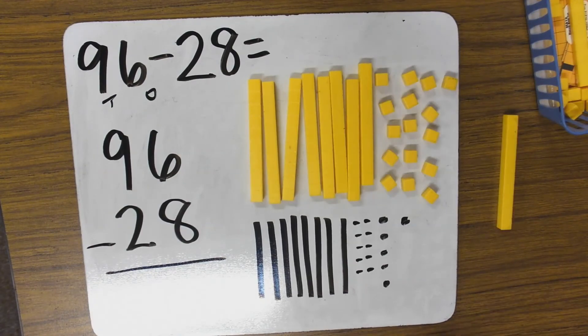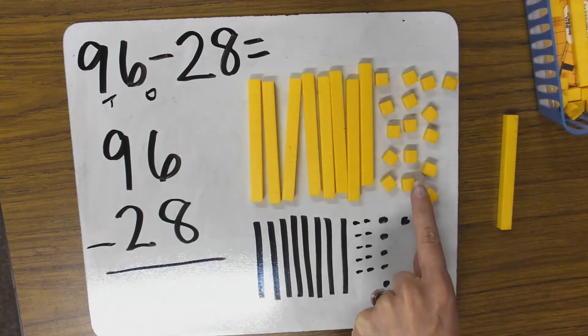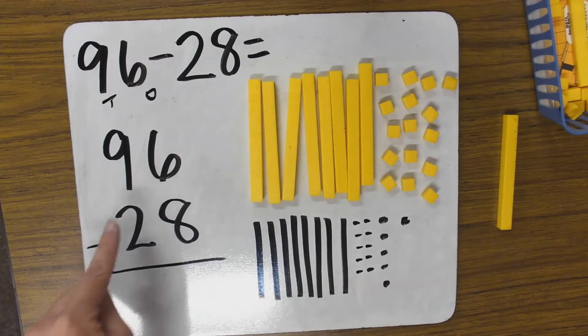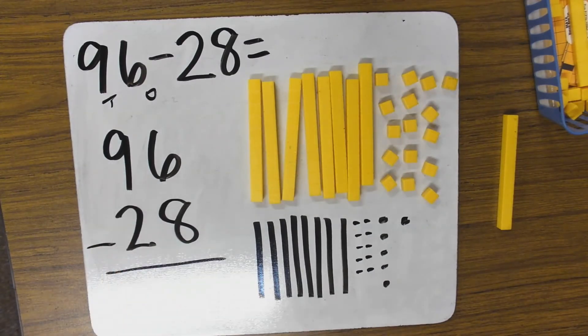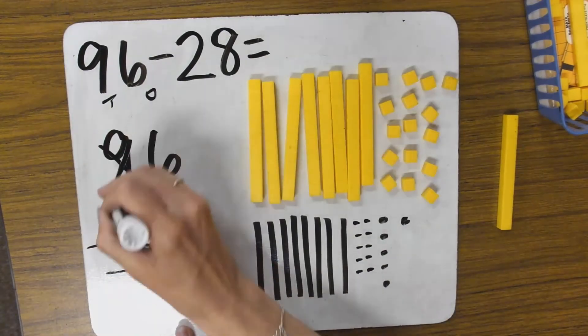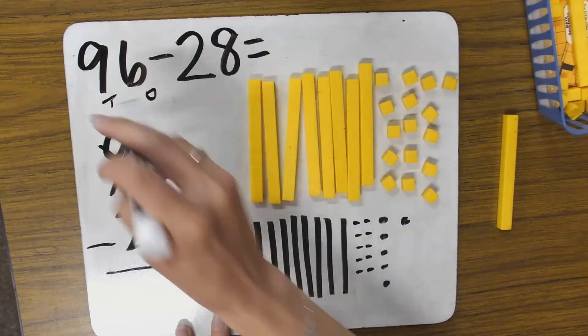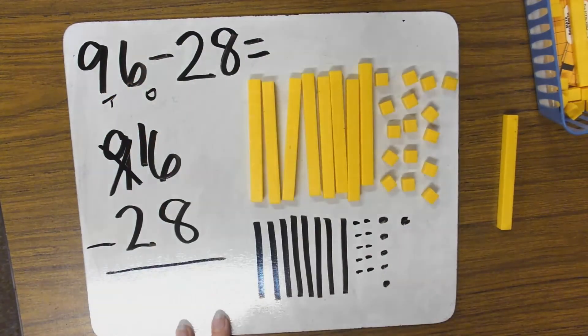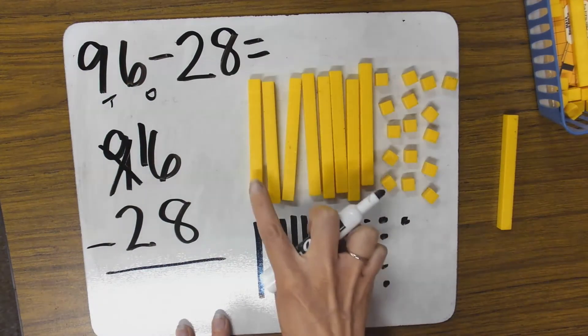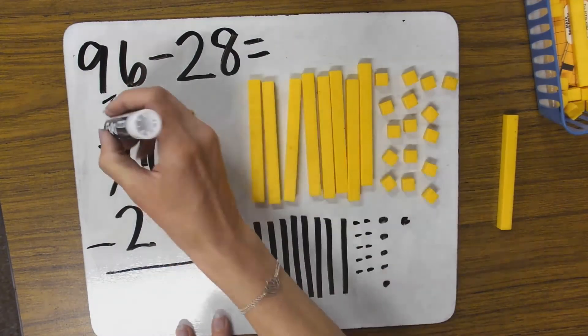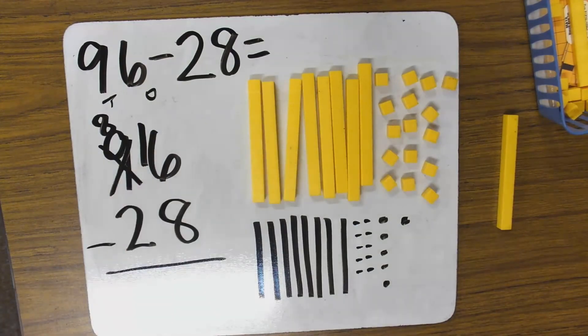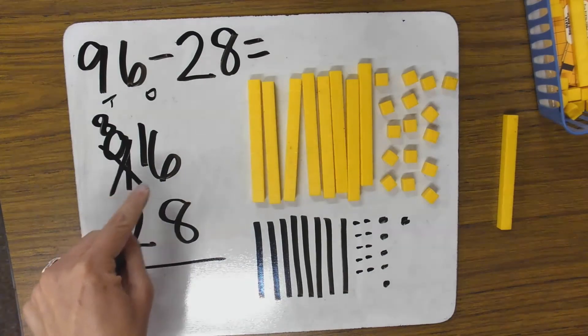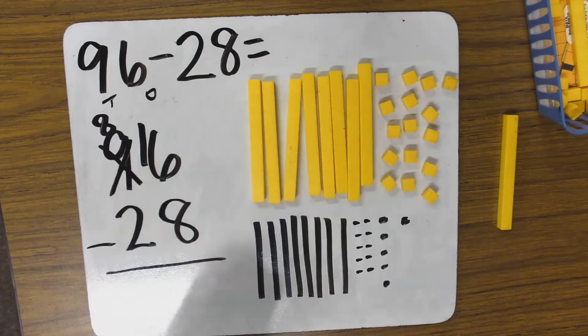Now, as you can see, I have traded my 10 for 10 1s. And here I've erased a 10 and put in my 10 1s. So what does that look like over here? See if you can go ahead and show the work. I'm going to trade a 10 for 10 1s. So I'm going to have 10 1s, so 16 1s. And now I only have 8 10s. So 8 10s, 16 1s. Just like we practice regrouping, just showing the numbers. Instead of 9 10s, 6 1s, 8 10s, 16 1s.